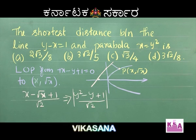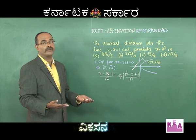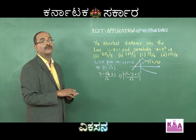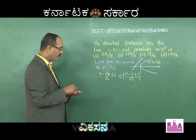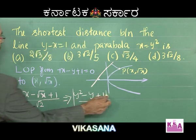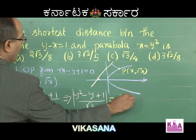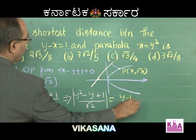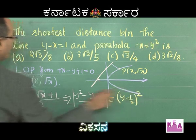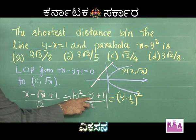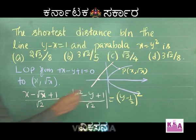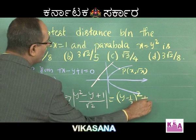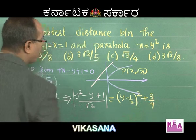This is actually the shortest distance expression. The least value can be found by completing the square. We rewrite y² − y + 1 as (y − 1/2)² − 1/4 + 1. So minus 1/4 plus 1 is plus 3/4.